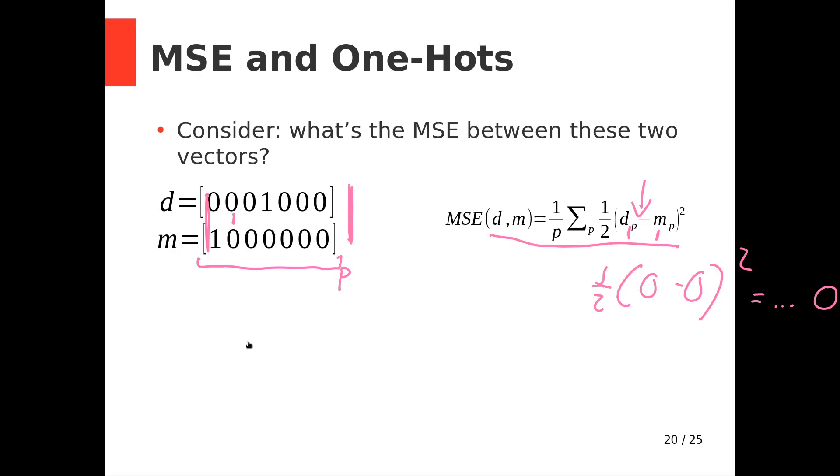In this column, we are going to have one half of zero minus one squared, which is one half of negative one squared, which is one half. In this column, we're going to have the same thing, but one minus zero, which ends up being one half.